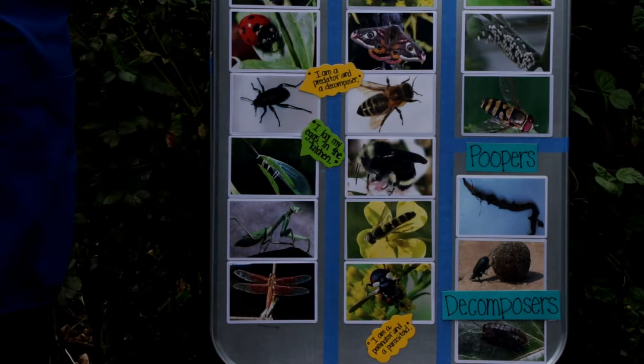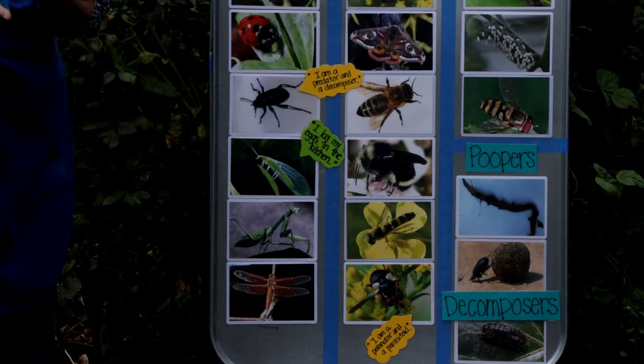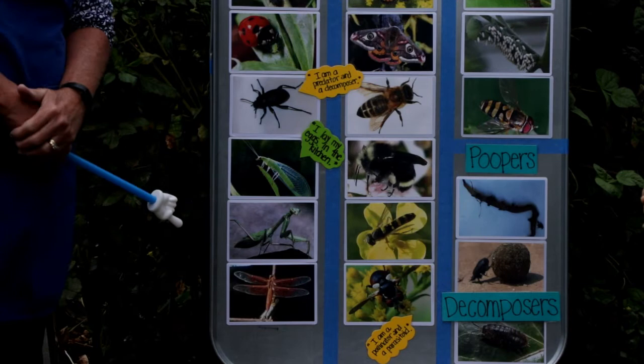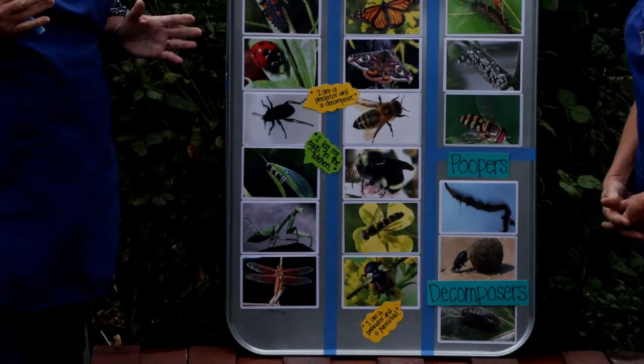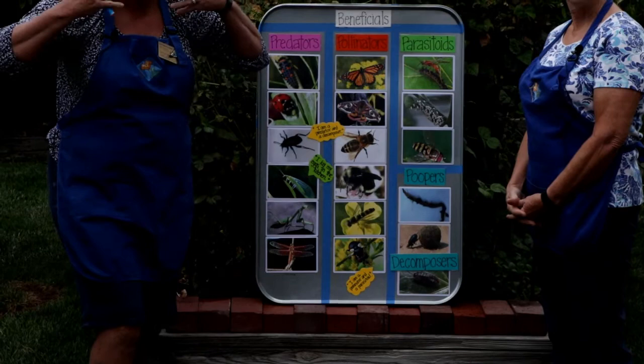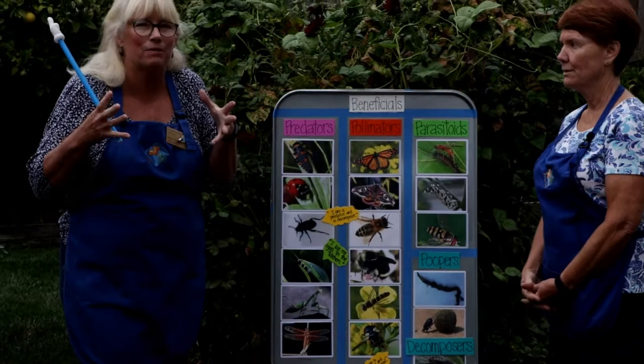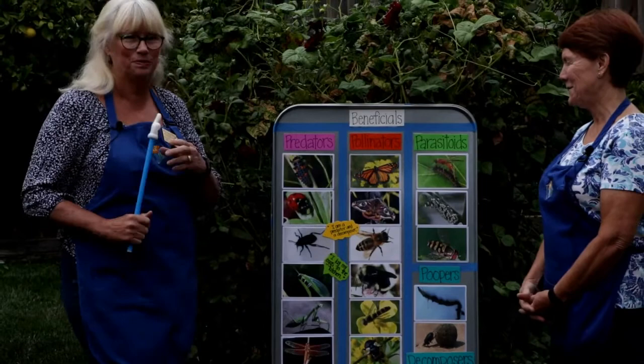The next insect is a praying mantis. Praying mantis use their front two legs like arms to catch their insects and chomp them up. At the bottom we have a dragonfly. Dragonflies come in so many different colors and have the ability to unlock their jaw so it acts like a basket to fly through the air and catch flying insects. They catch a lot of mosquitoes — you need to thank the dragonflies for eating those mosquitoes so they're not around to bite you.